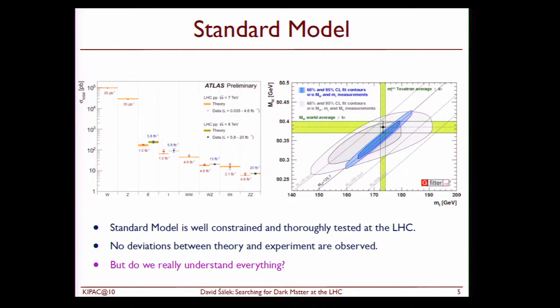And also we can do self consistency checks for the standard model where we actually measure the W mass and top mass. And without these things in we can actually predict what the top mass and W mass should be from the processes where we have loop contributions. We see everything is well in agreement so standard model is well tested, well constrained and we don't see any deviations from the theory.